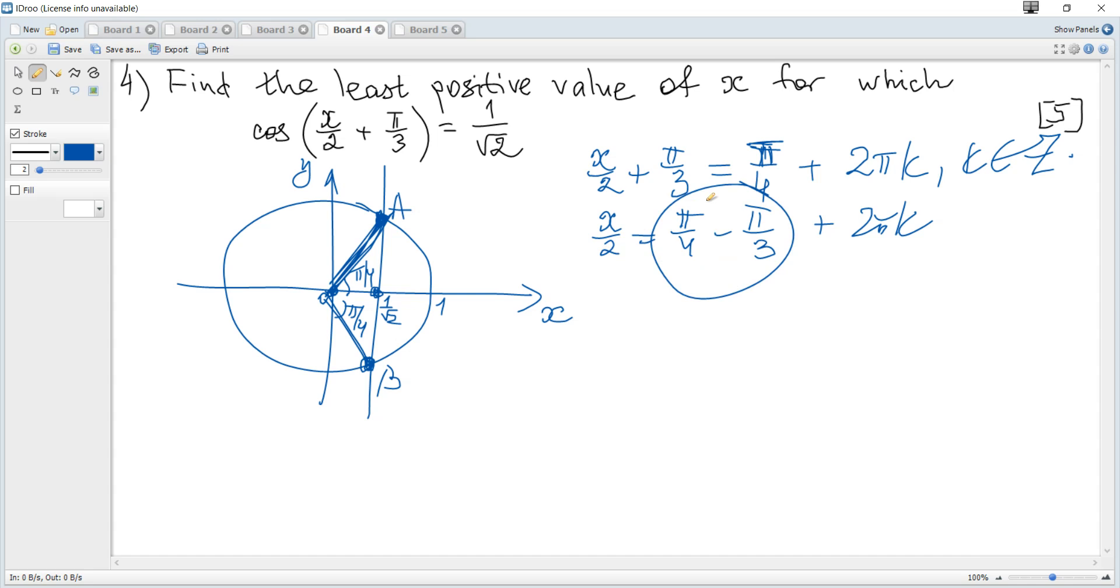x/2 is π/4 minus π/3 plus 2πk. We can calculate it and then multiply each term by 2 to get that x equals minus π/6 plus 4πk. This is the general solution which corresponds to point A, angle A.